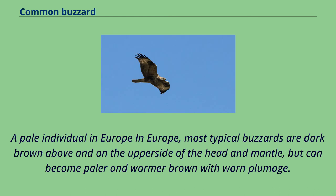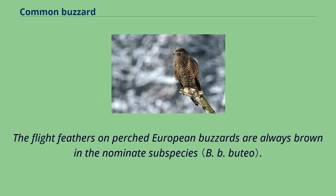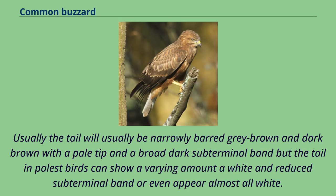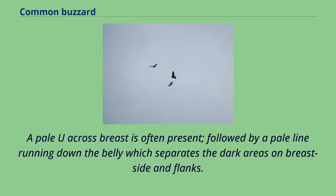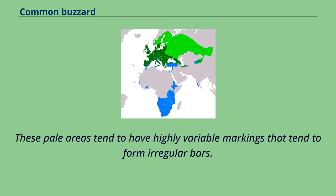In Europe, most typical buzzards are dark brown above and on the upper side of the head and mantle, but can become paler and warmer brown with worn plumage. The flight feathers on perched European buzzards are always brown in the nominate subspecies. Usually the tail will be narrowly barred gray-brown and dark brown with a pale tip and a broad dark subterminal band, but the tail in palest birds can show a varying amount of white and reduced subterminal band or even appear almost all white. In European buzzards, the underside coloring can be variable but most typically shows a brown-streaked white throat with a somewhat darker chest, a pale U across the breast, and a pale line running down the belly separating the dark areas on breast, side and flanks.